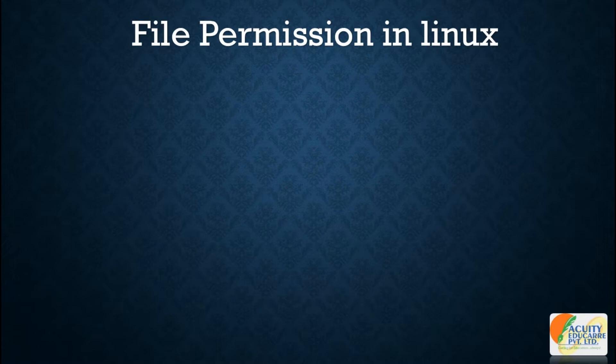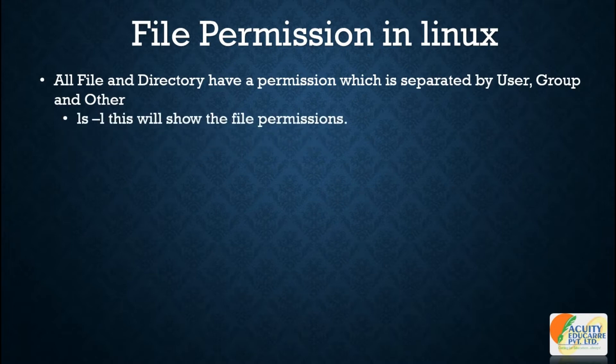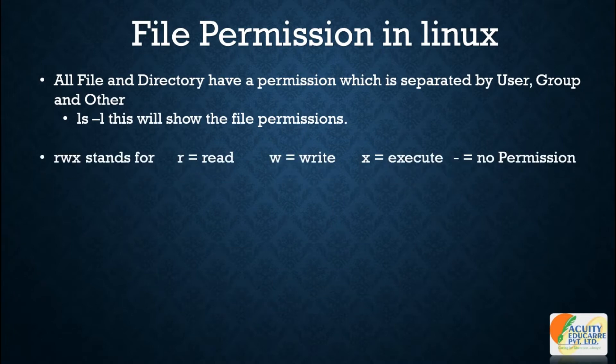First of all, all files and directories have permissions which are separated by users, group, and others. To see those permissions, type 'ls -l' — it will list the details of files and directories. There are three types of permissions: read, write, and execute. If you see a hyphen, that means you don't have permission in that section.